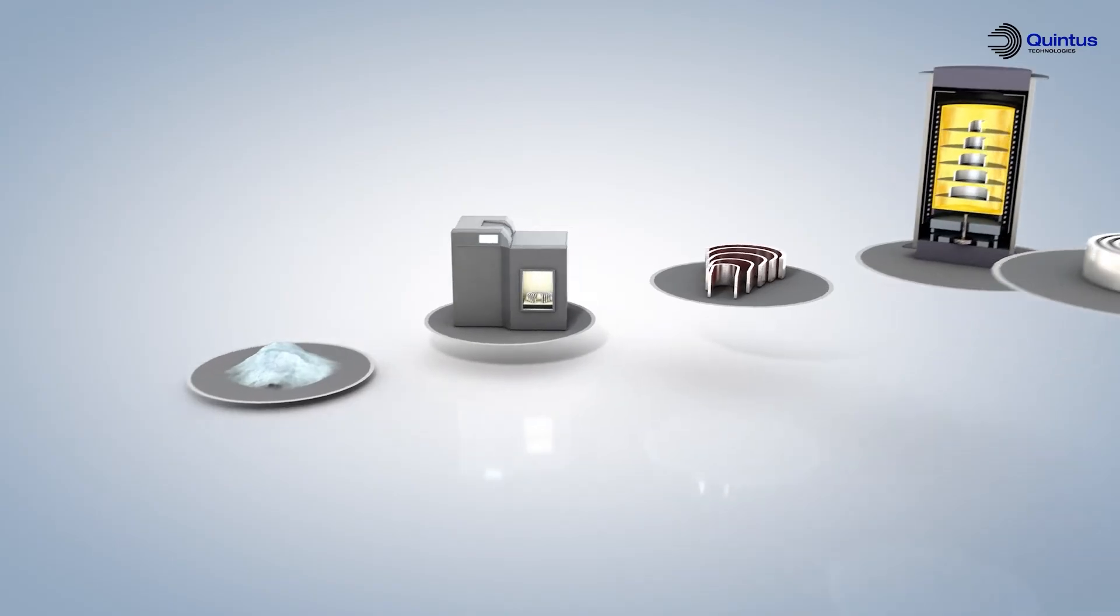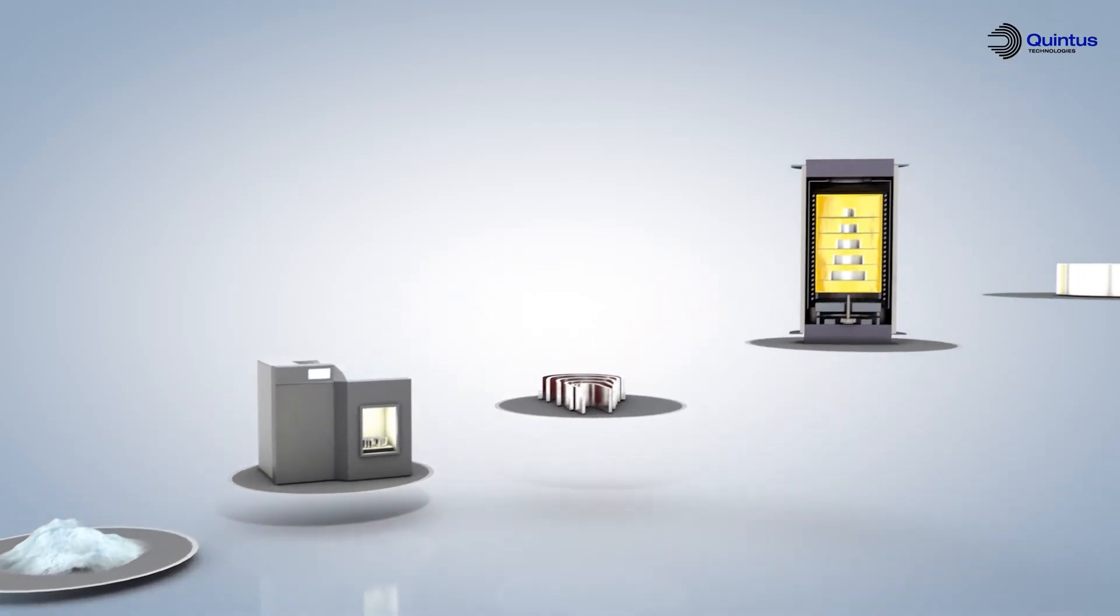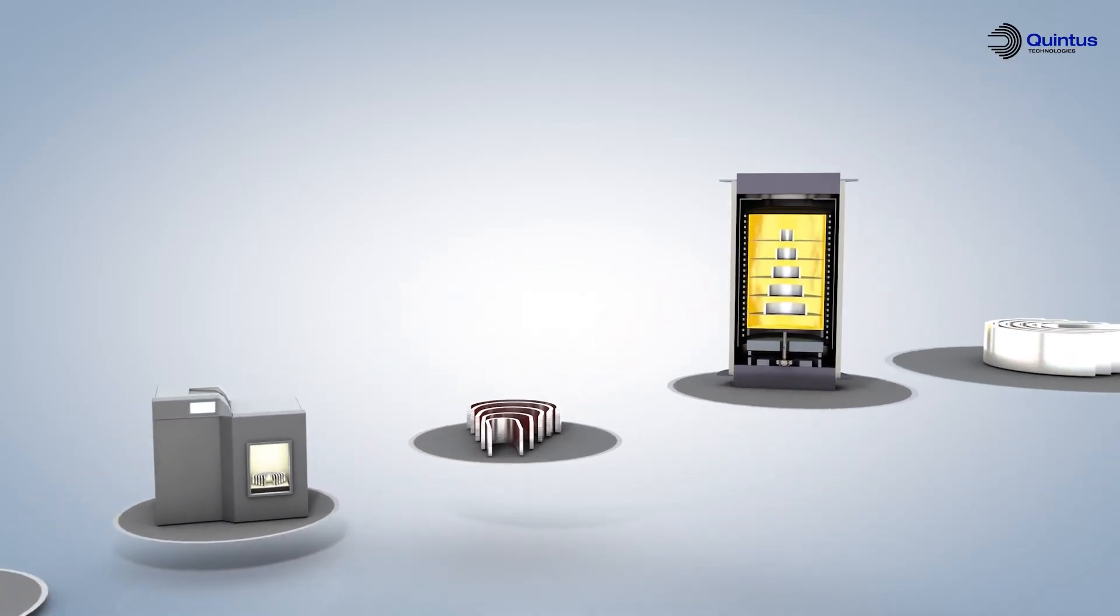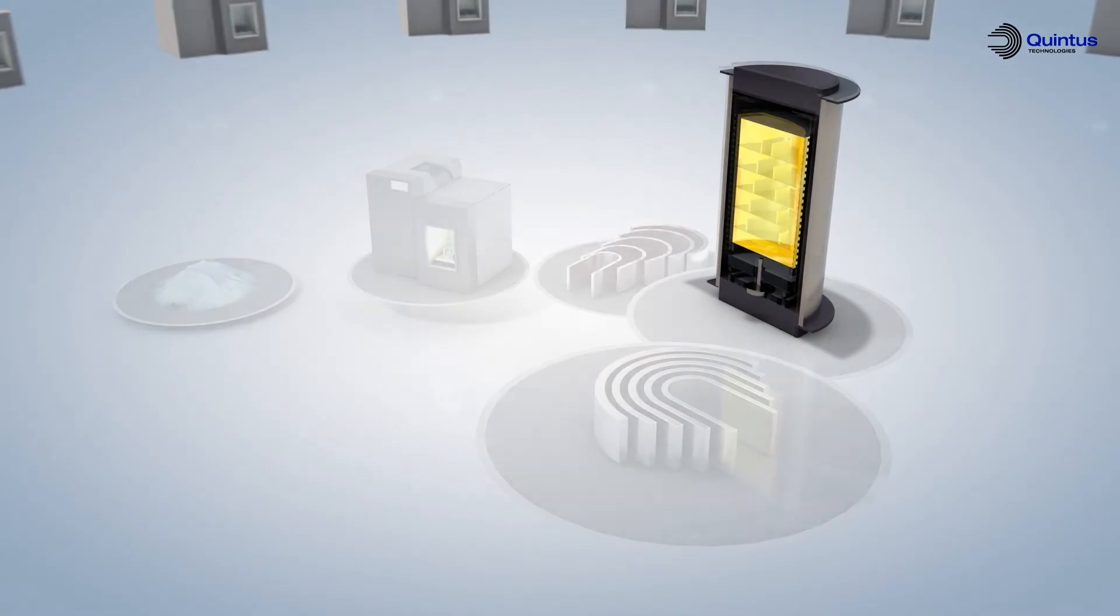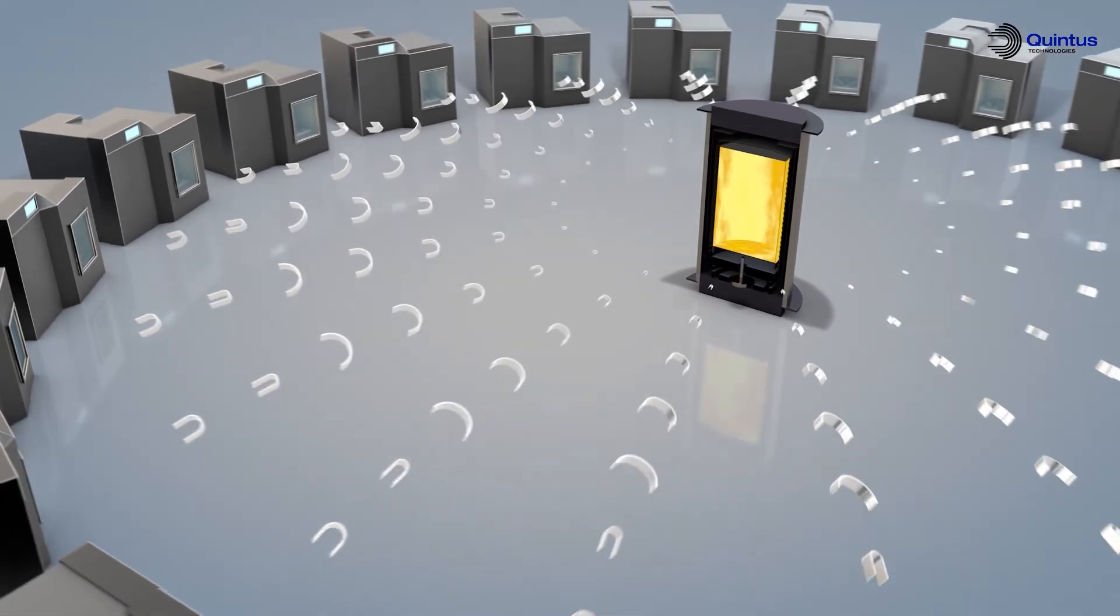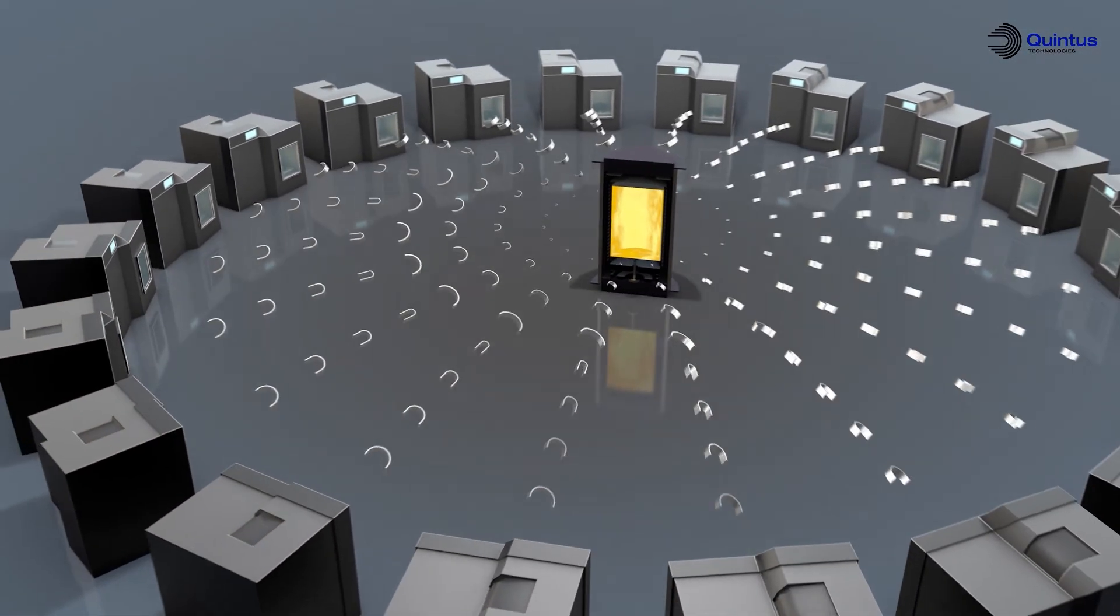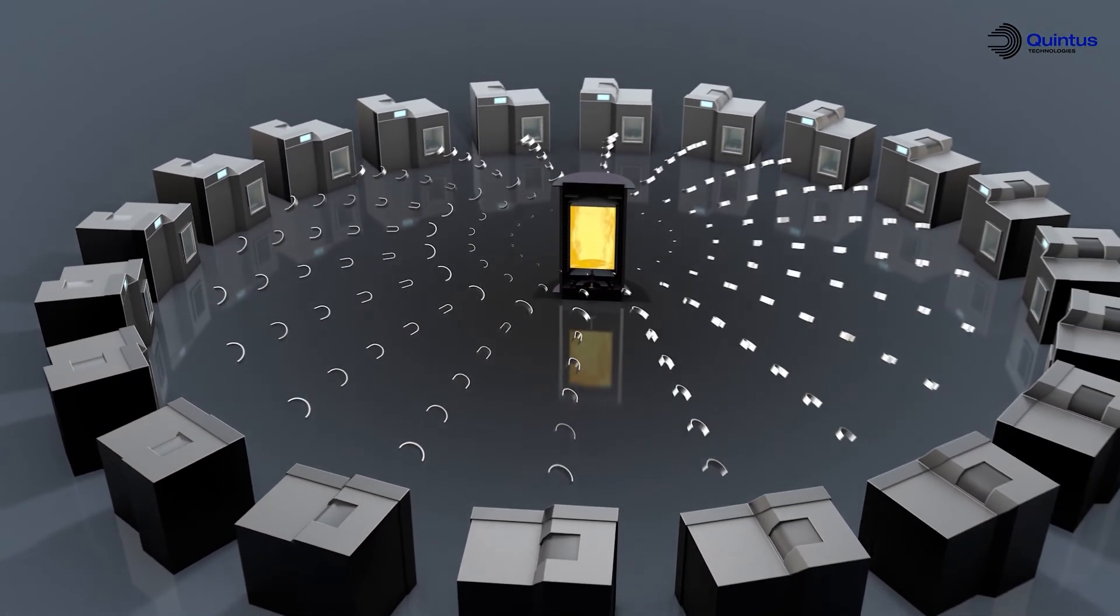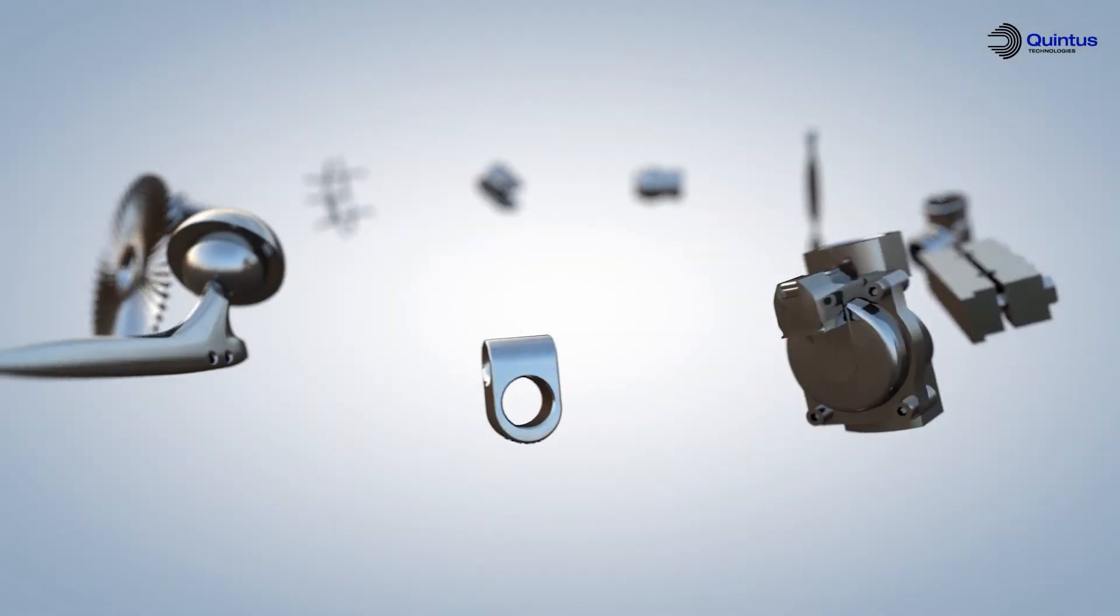With these benefits, the Quintus HIP technology combines extremely well with powder-based additive manufacturing, providing both productivity and longer parts service life. One of Quintus small compact HIP systems can easily handle the post-process of 10 to 20 additive printers and the full process from powder to finished part can be shorter, more cost efficient and flexible without losing control of part quality.